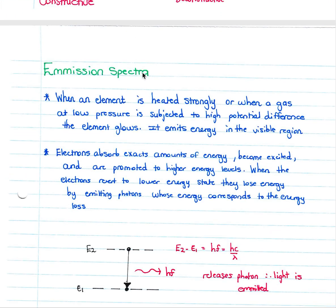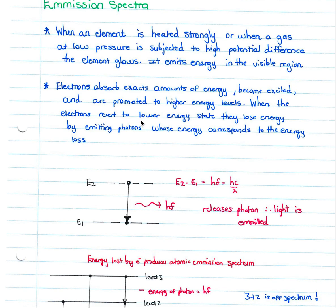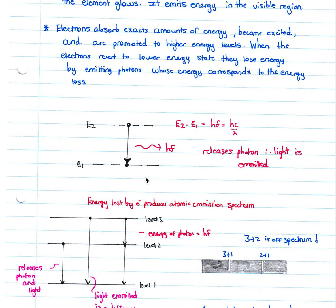When we look at emission spectra: when an element is heated strongly or a gas at low pressure is subjected to high potential difference, the element glows and emits energy in the visible region. Electrons absorb exact amounts of energy, become excited, and are promoted to higher energy levels. When the electrons revert to lower energy states, they lose energy by emitting photons whose energy corresponds to the energy loss. If we look at two energy states E2 and E1, when an electron drops from state two to state one, it releases a photon of energy calculated by HF.